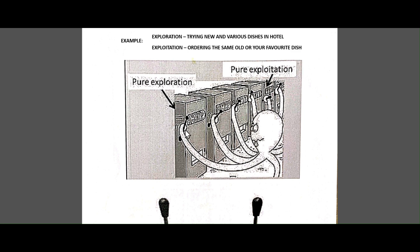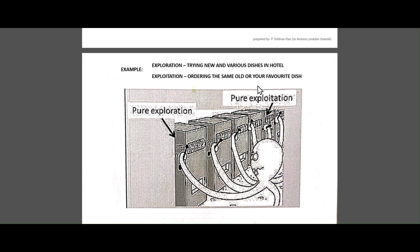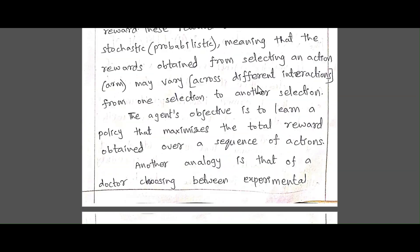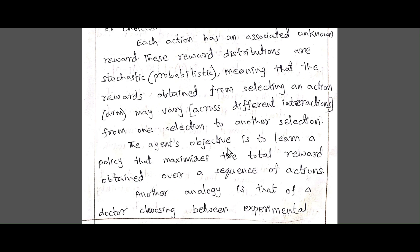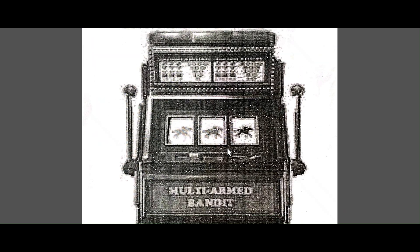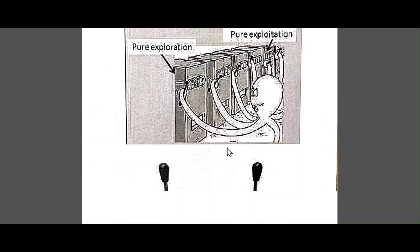The agent sometimes tries various actions to see which action leads to which reward. And sometimes he takes previously known actions — previously based actions. Balancing these actions can help in reducing the stochastic multi-armed bandit problem. The problem can be reduced by balancing pure exploitation and pure exploration.